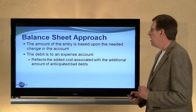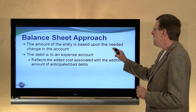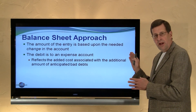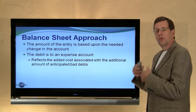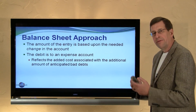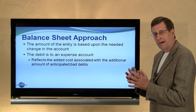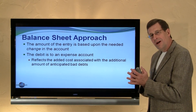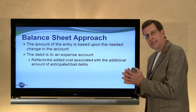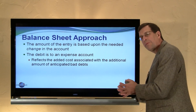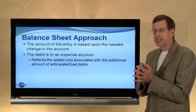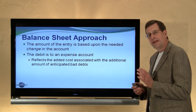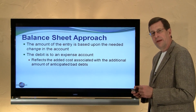Let's give this just a few more thoughts. The amount of the entry was based upon the needed change in the account. The $25,500 with the balance sheet approach was the desired target or desired amount in the account — it was not the amount to expense. We expense the amount needed to bring it up to the balance sheet target. The debit is to an expense account and reflects the added cost for that particular period of time.